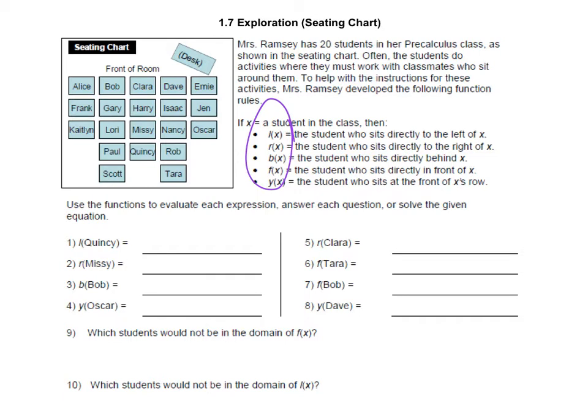So L of X means the student who sits to the left of, R of X is to the right of, B of X is behind, F of X is in front, and Y of X is who's at the very front row. If you don't have this filled out or you were super confused, you can pause the video after we do this first one and see if you can get the rest of them.